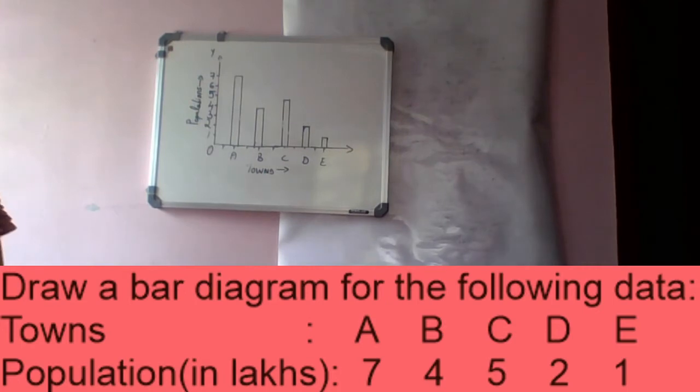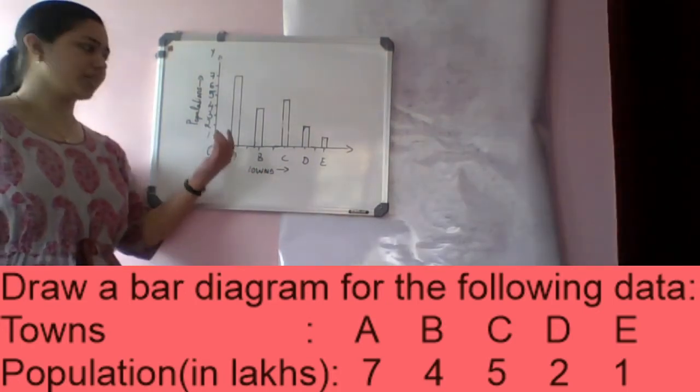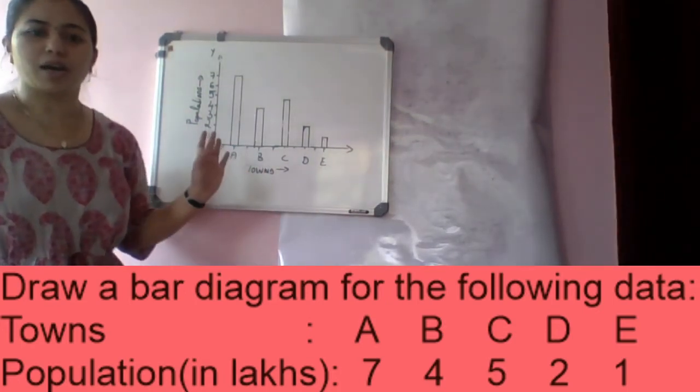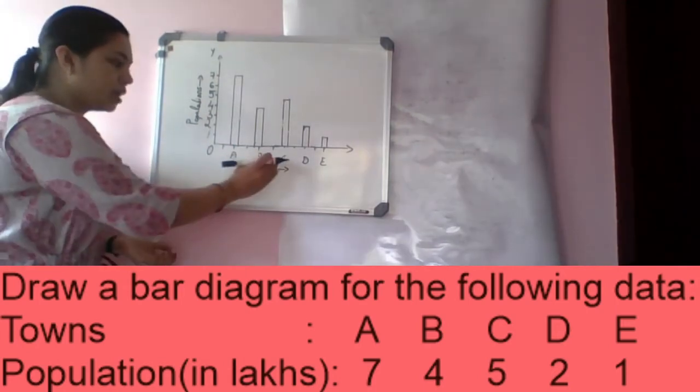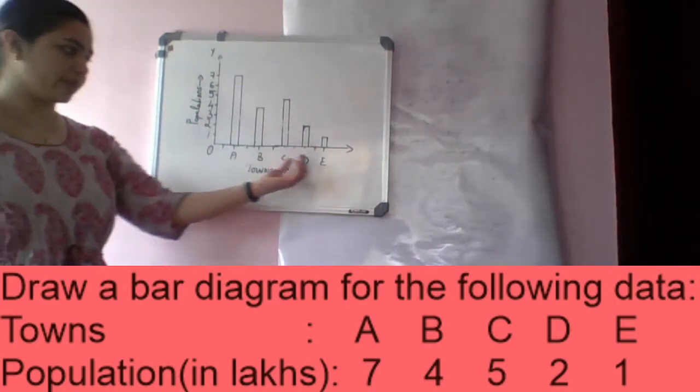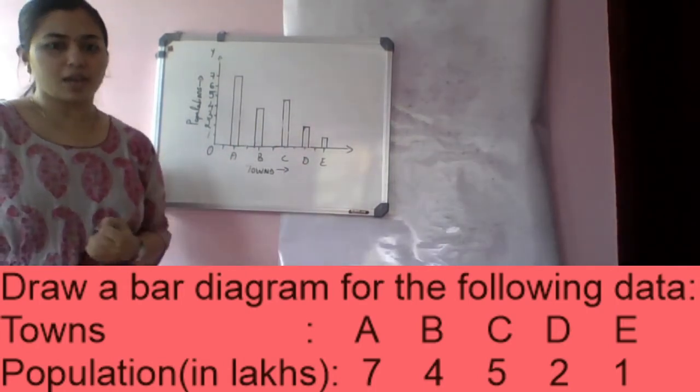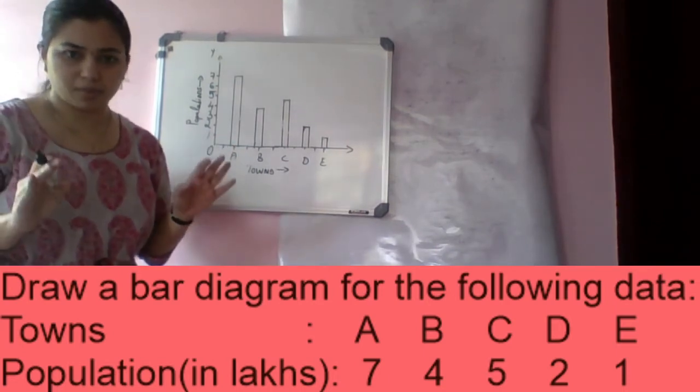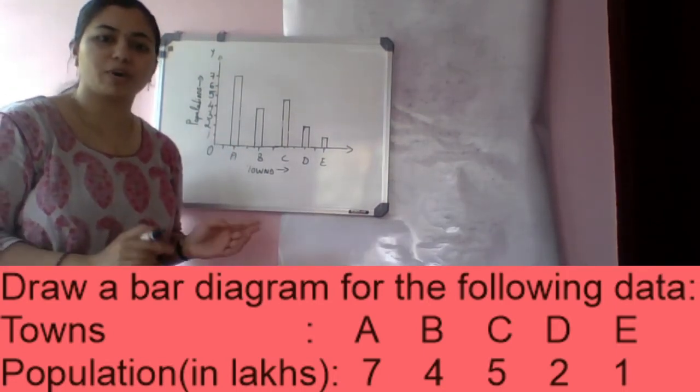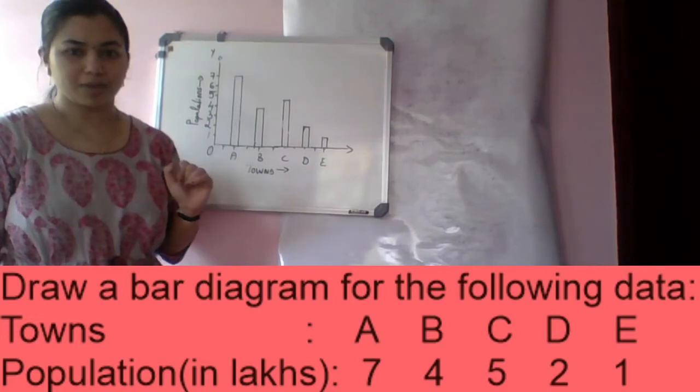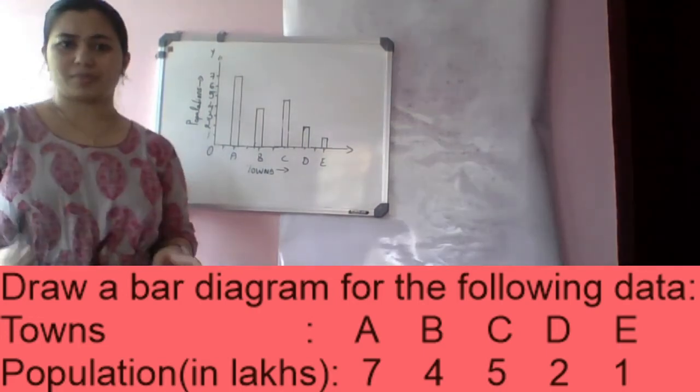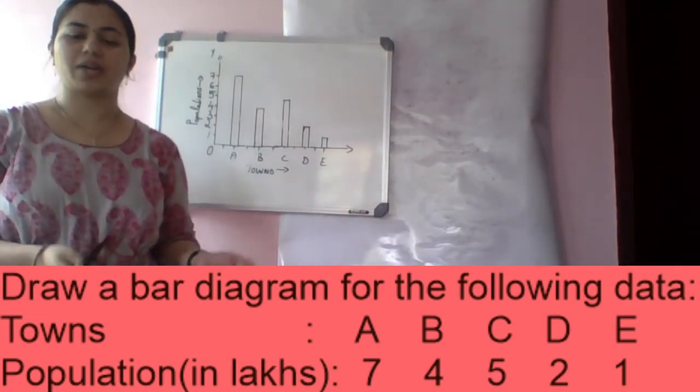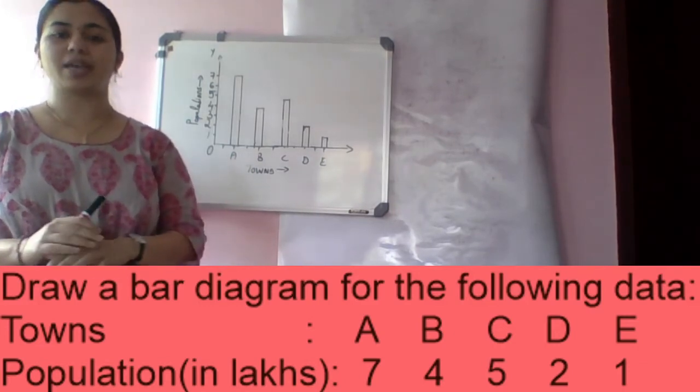So these are the corresponding bar diagrams. Everything else is same. Instead of lines, we use bar to represent this data. Say it is dimensional, 1 dimensional, 2 dimensional, 3 dimensional, any diagram.